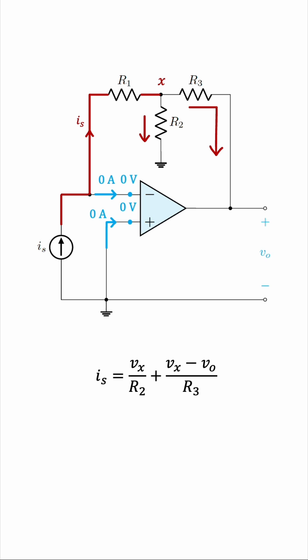So we need to find another equation that will allow us to eliminate this Vx. This second equation can be found by writing the KCL equation at this node, call it N. As we said, IS is entering it.